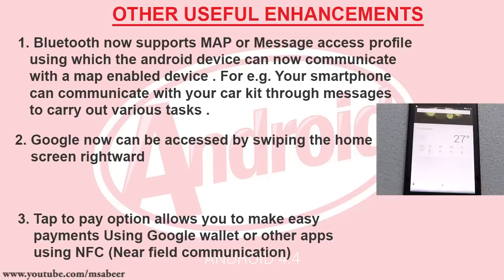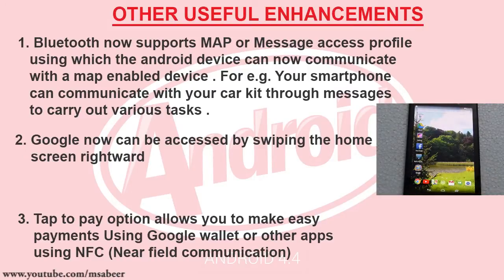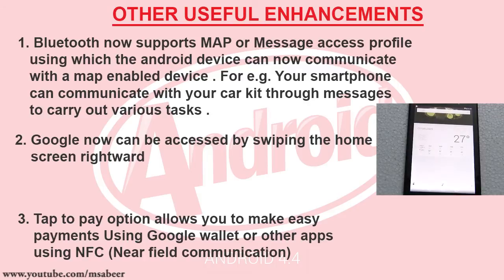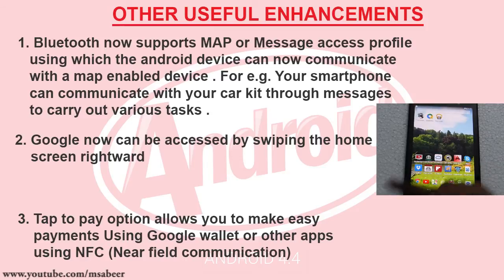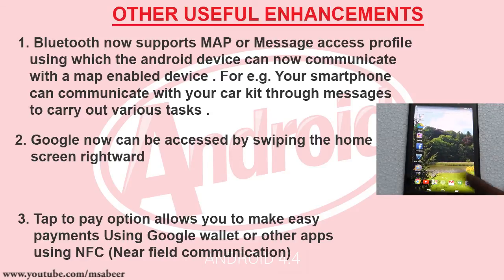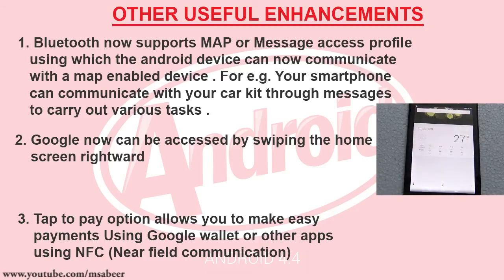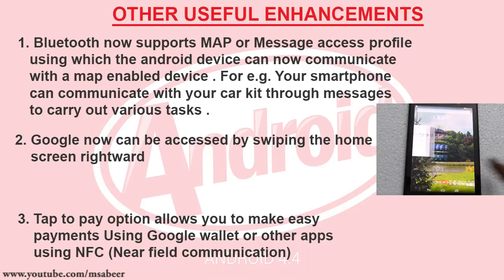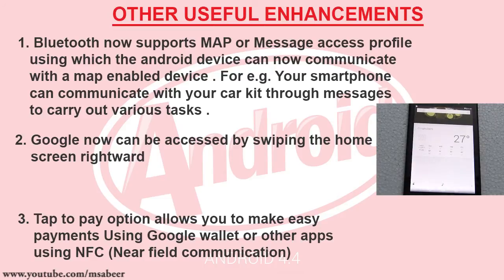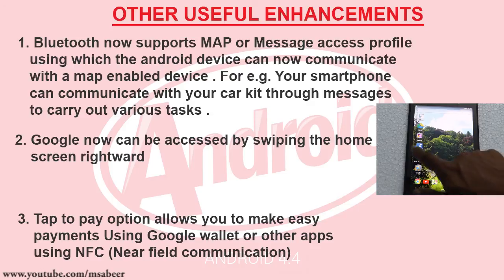Now let's see other useful enhancements in KitKat. Bluetooth now supports MAP (Message Access Profile), allowing the Android device to communicate with a MAP-enabled device — for example, your smartphone can communicate with your car kit through messages to carry out various tasks. Google Now can be accessed by swiping the home screen rightward. The tap-to-pay option allows you to make easy payments using Google Wallet or other apps using NFC.